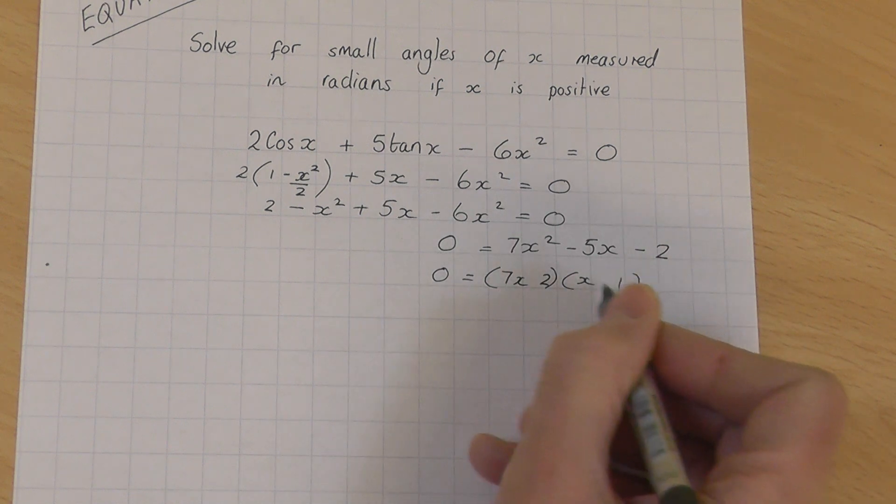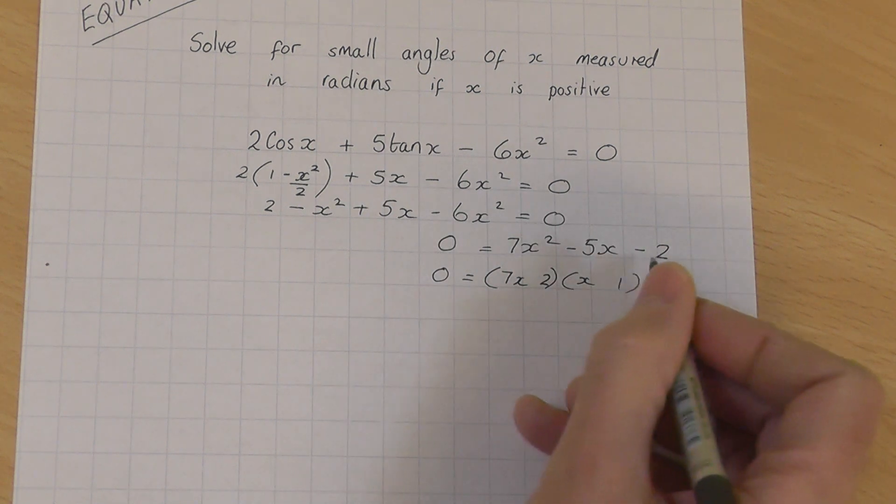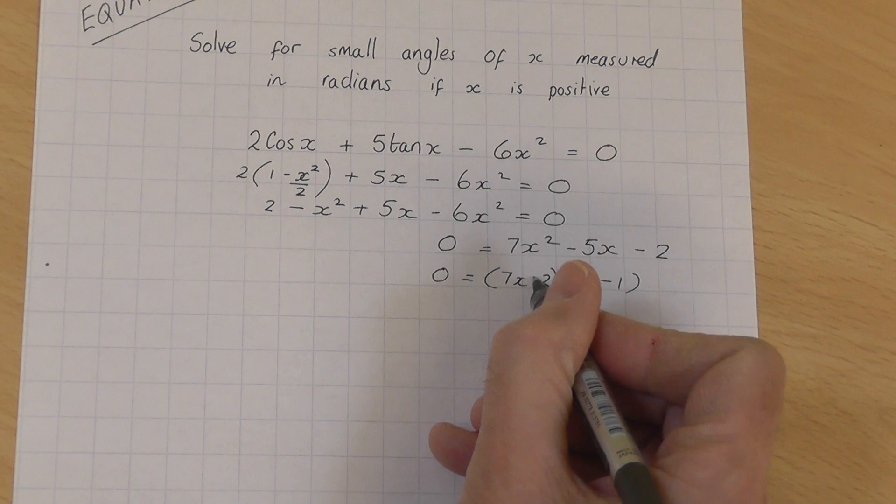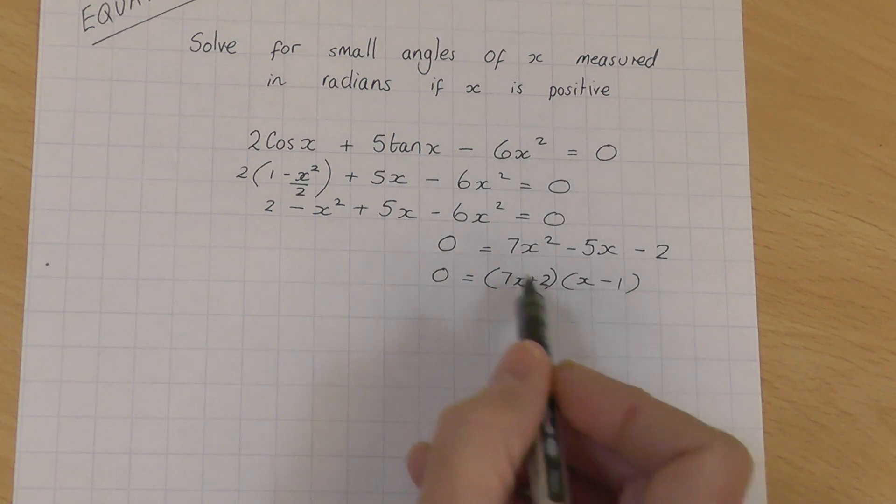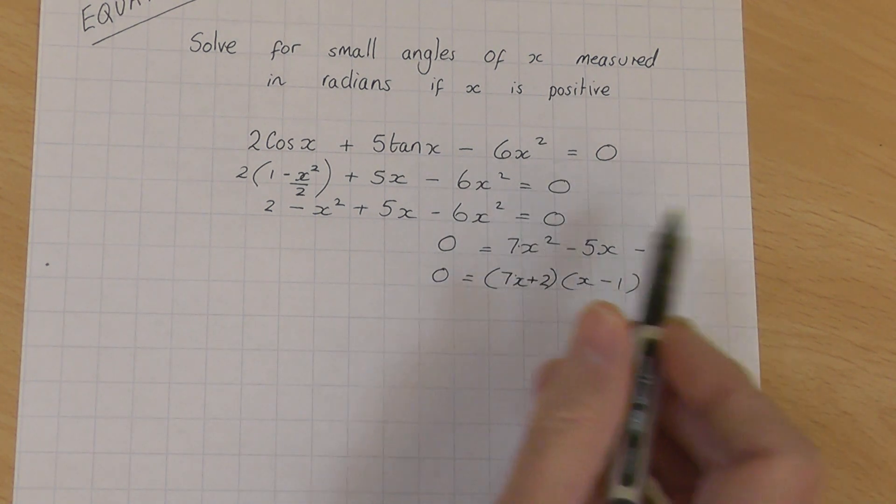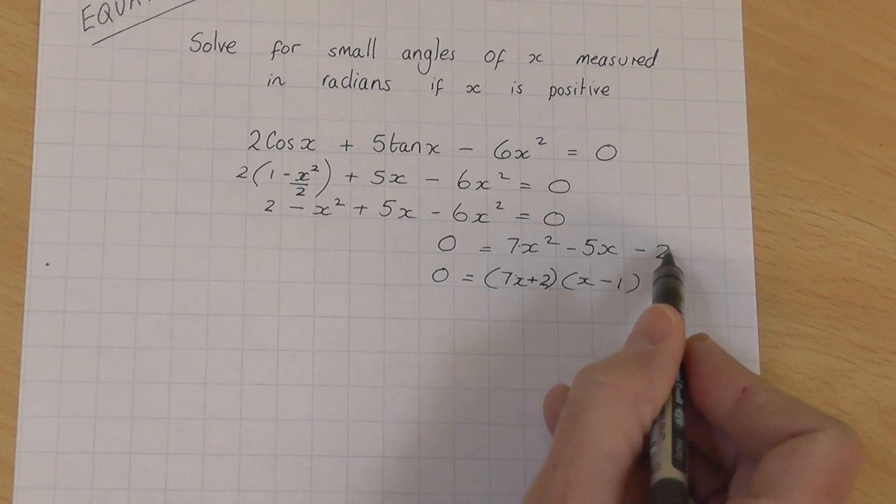And they've got to be opposite signs with a little bit of inspection going on. I think that must be a minus and that must be a plus. Let's just check. 7x times x is 7x squared. The plus 2 times minus 1 is minus 2.